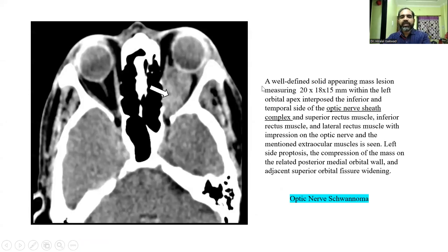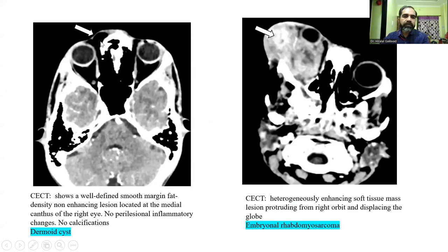In this image, there is a well-defined solid mass lesion in the orbital apex involving the optic nerve complex. This was a case of optic nerve glioma. This CT image shows a well-defined, smooth-margined, fat-density, non-enhancing lesion located at the medial canthus of the right eye. This was a case of dermoid cyst.